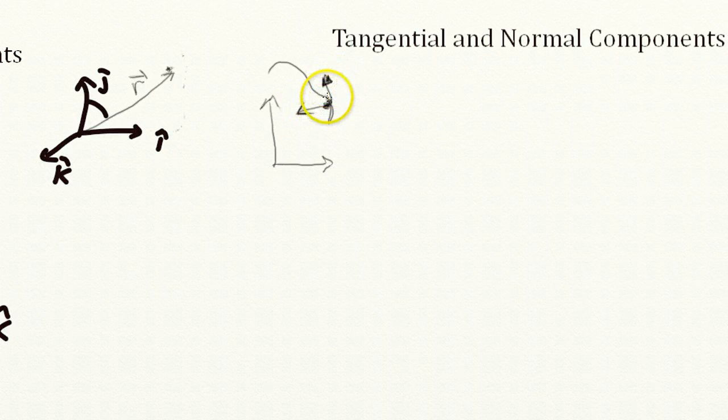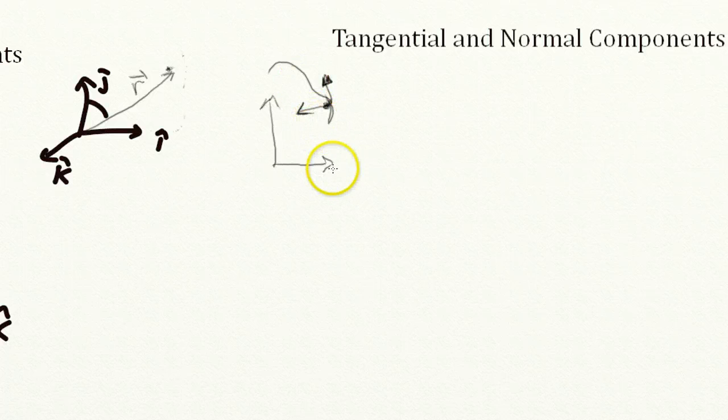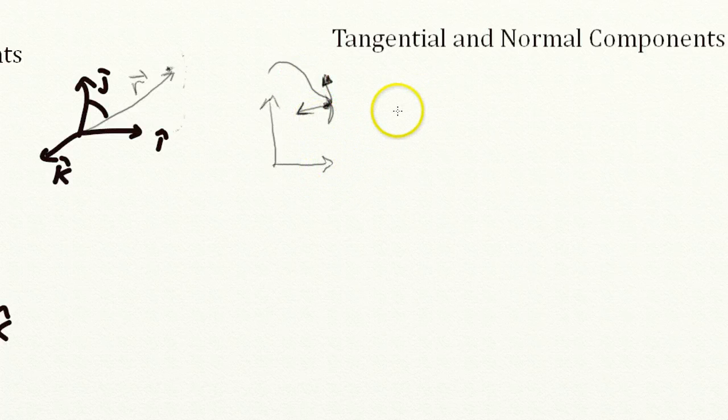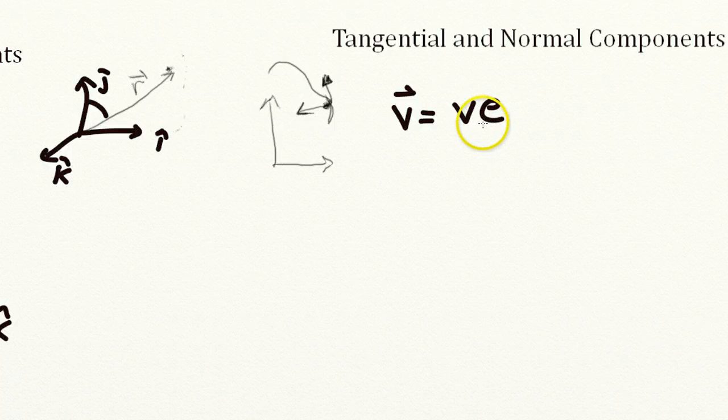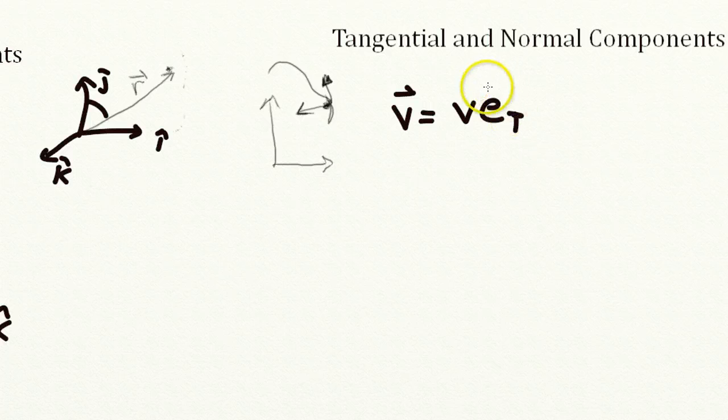So you could see this coordinate system shifts along as this particle moves along. And this is useful for some calculations. So in this case, we have the velocity is really equal to the velocity, kind of by definition, the magnitude of the velocity in the tangential direction. So this is kind of by definition.